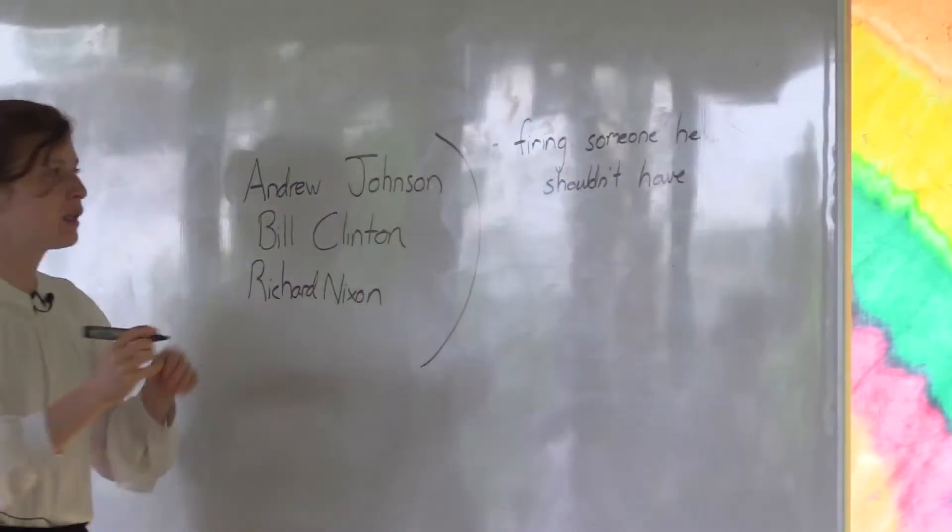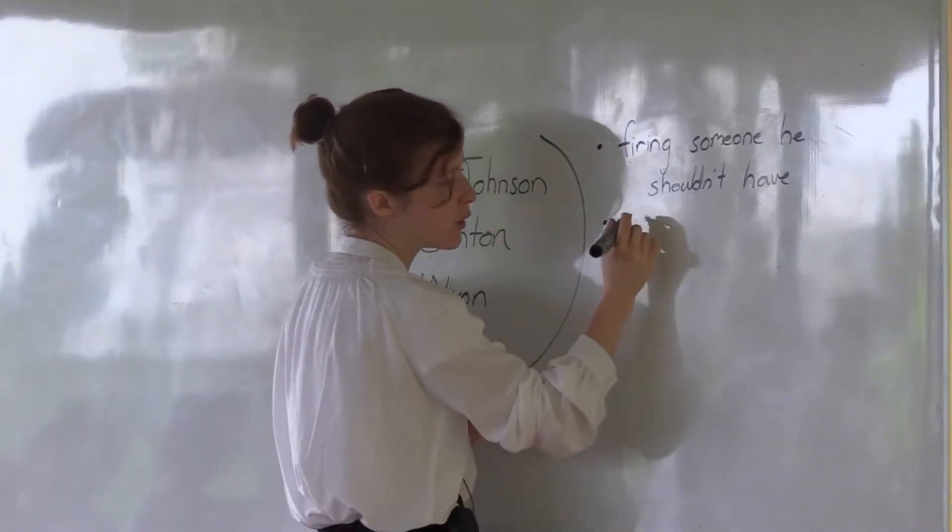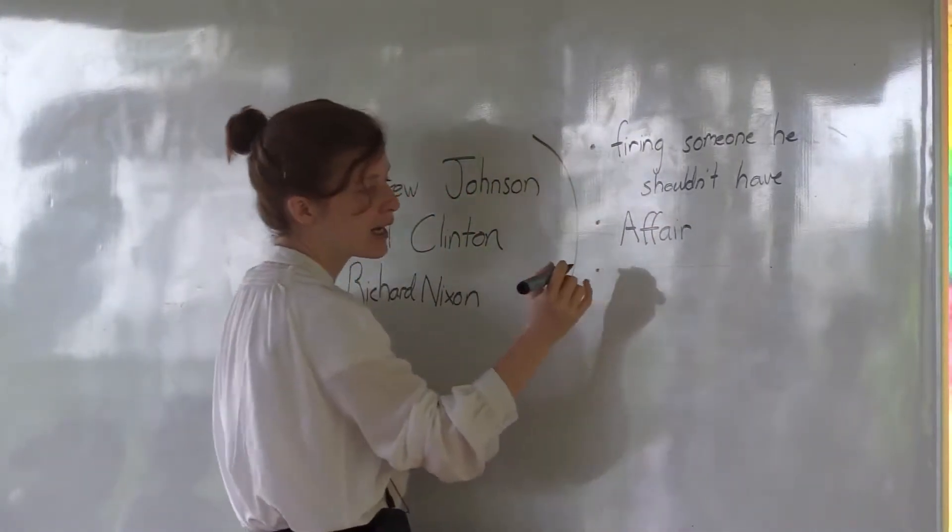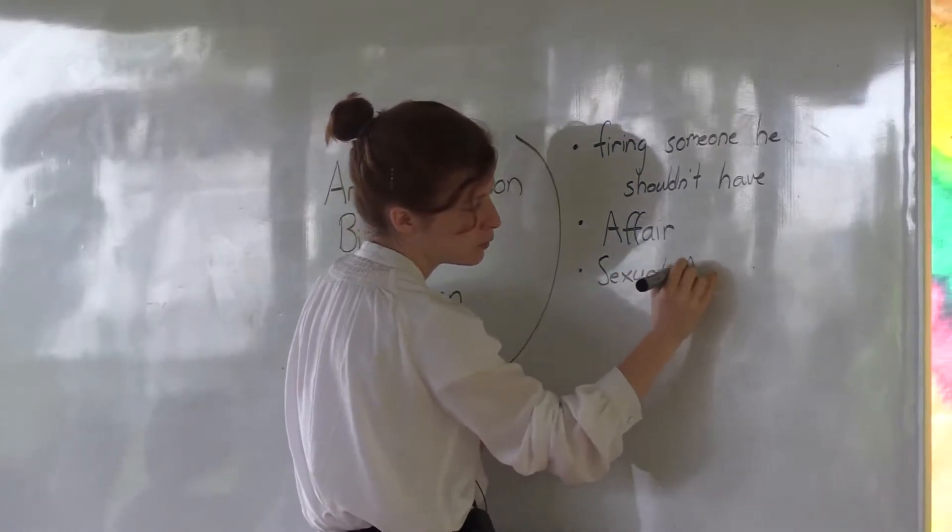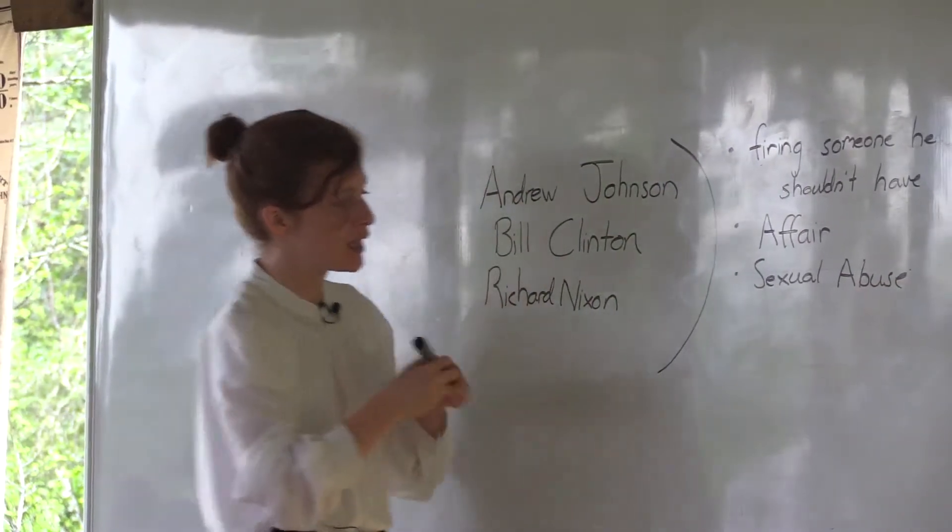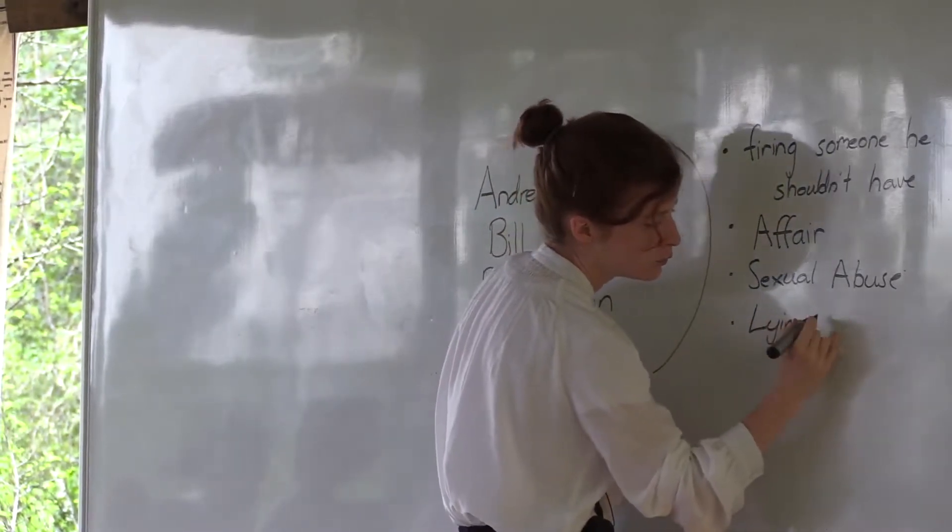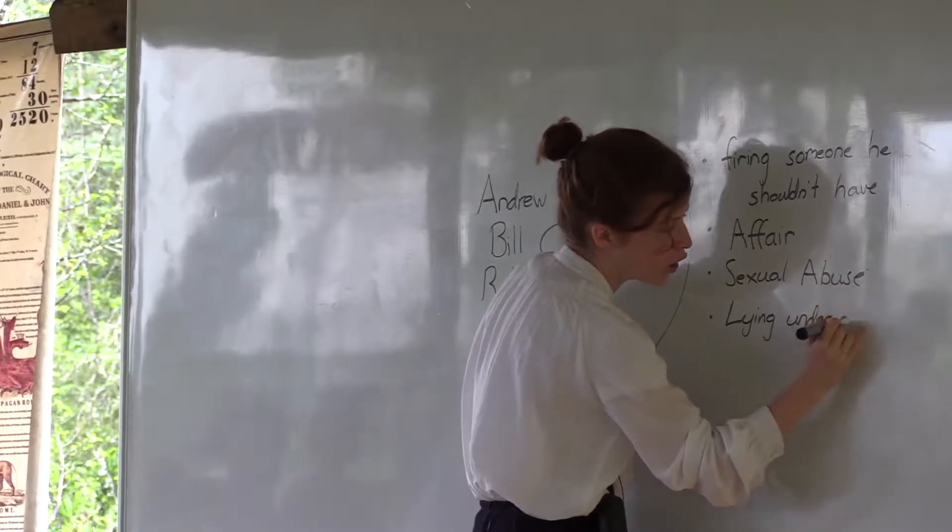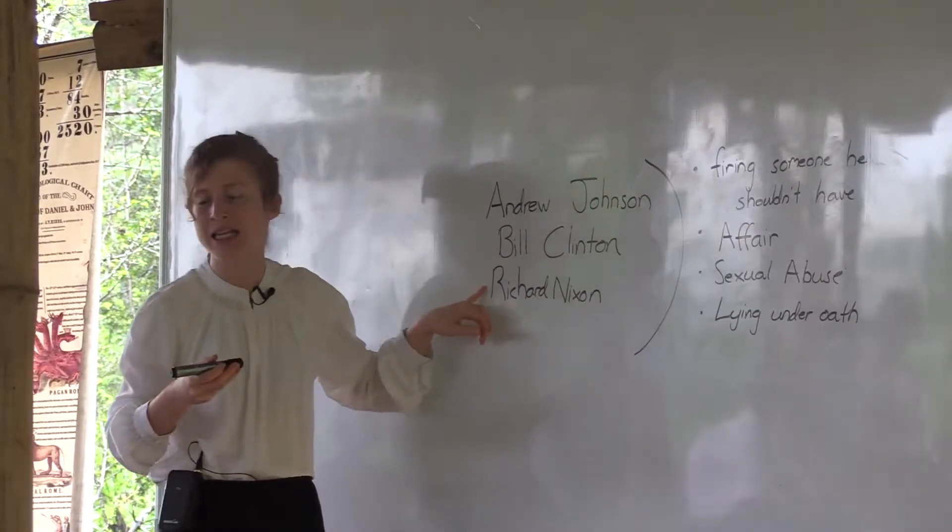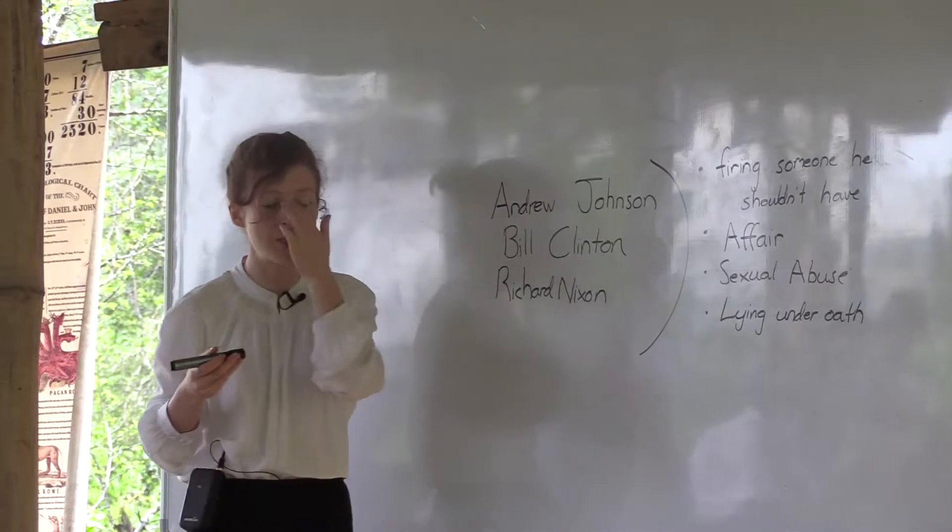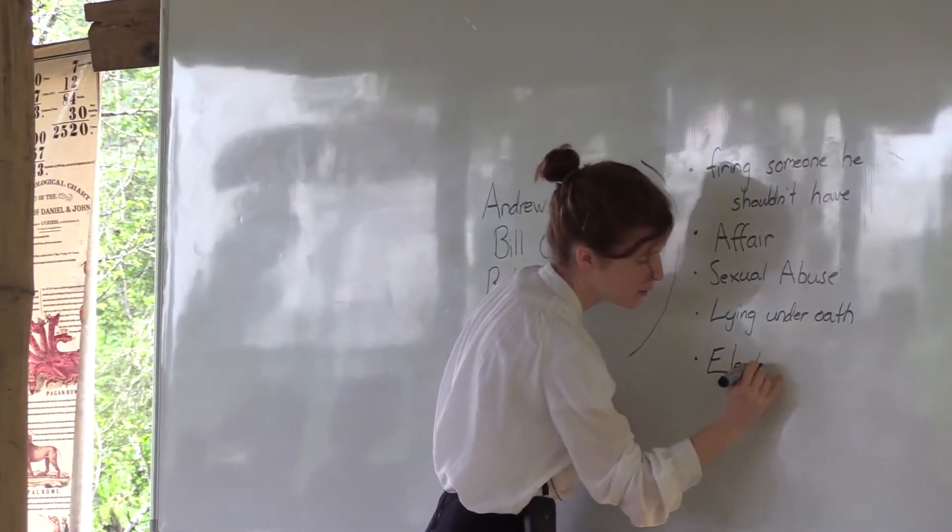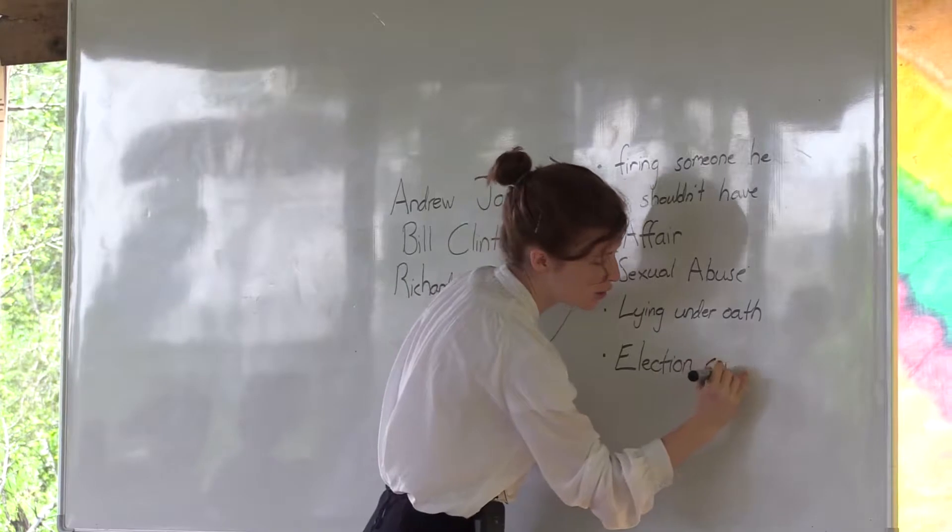Andrew Johnson - firing someone he shouldn't have. What about Bill Clinton? He undertook an affair, also significant allegations of sexual abuse. Those women were paid off. One other thing - lying under oath. He lied to try and get out of those allegations.